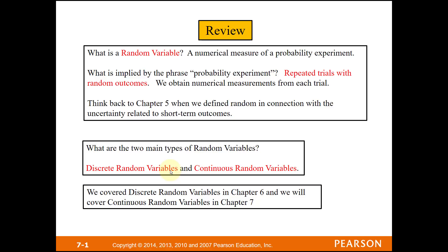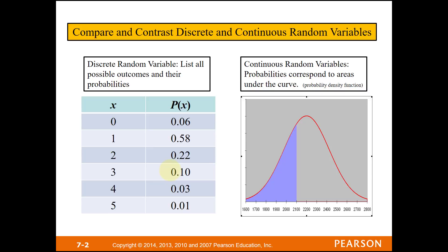With discrete variables, like number of friends, you can't have 1.3727 friends — but with time, a continuous variable, you could have 1.2389 seconds. When you have a discrete random variable, you have a table listing all possible outcomes and their corresponding probabilities. You can't do that with a continuous random variable because you have infinitely many outcomes, so you change your approach completely.